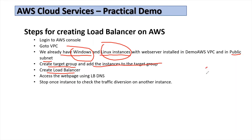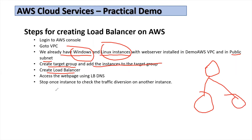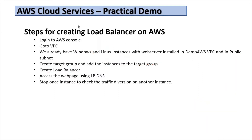The load balancer will start diverting traffic on these instances. Once we are done with this, for testing purposes, we will stop one instance on which existing traffic is going, and then automatically the load balancer will shift the traffic to another instance. Let me go to the diagram for more clarity.